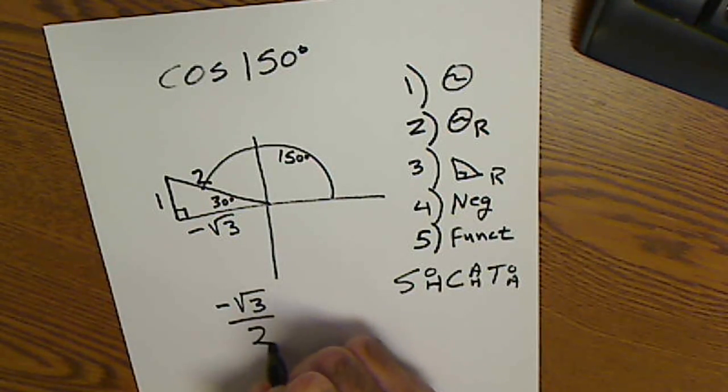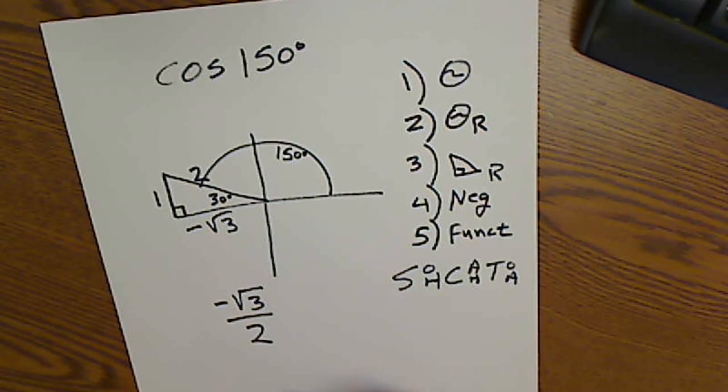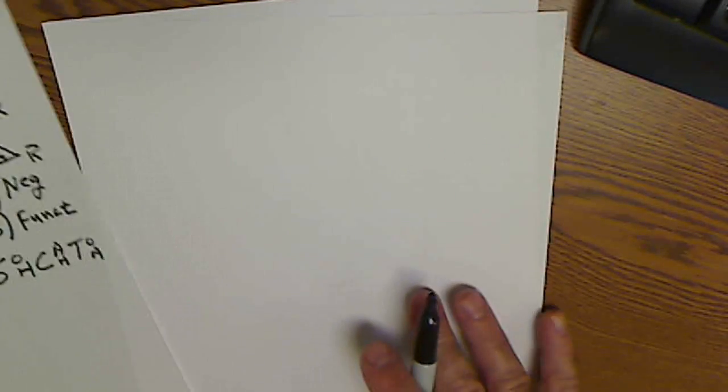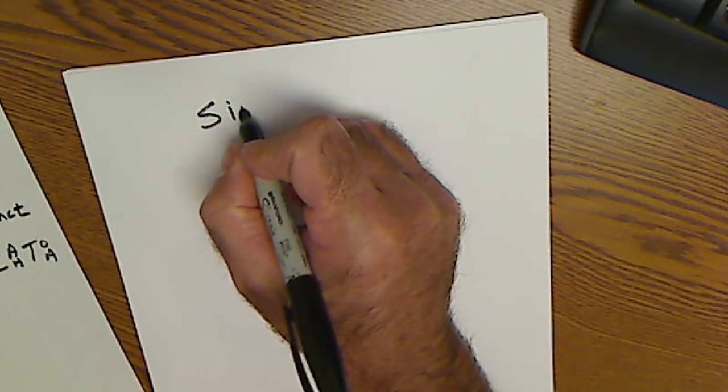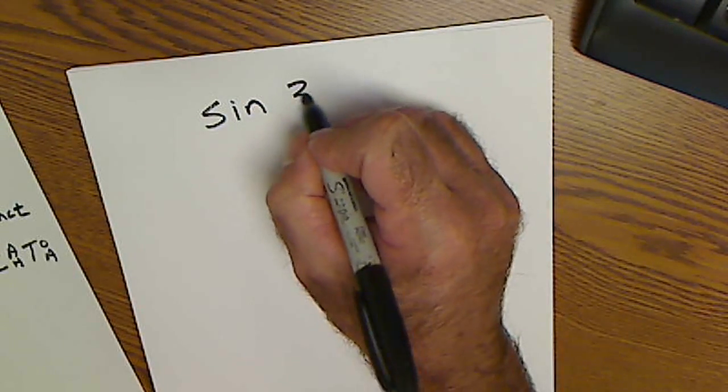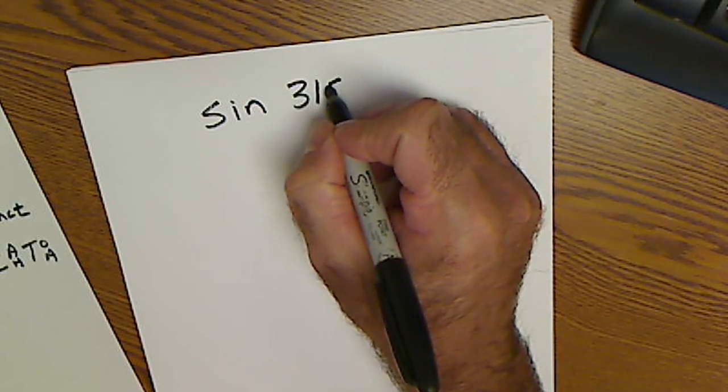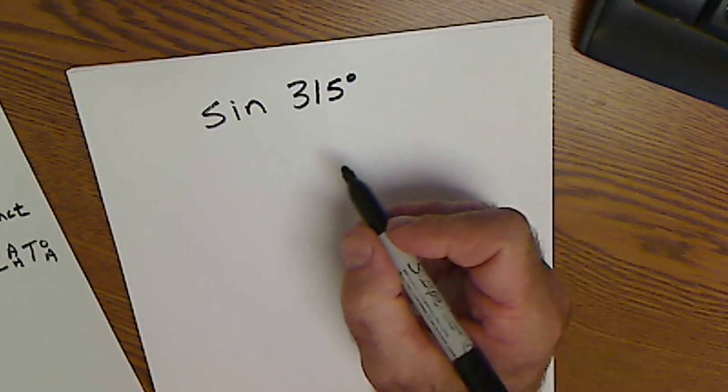That's how you find exact values. Radians are pretty much the same. I use the same way to do it. Let's take a look at, say, sine of 315. Whoops, I was gonna do radians. Let's do another degree problem.